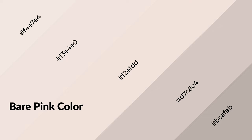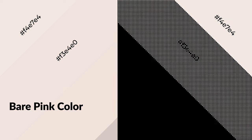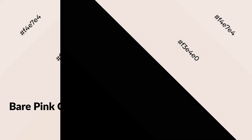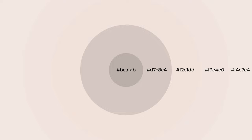Bare pink is a warm color and it emits cozier and active emotions. Warm colors are symbols of warmth, fire, heat, and sunshine. It also evokes joy, passion, love, and even anger. You can see warm colors used in restaurants and gyms.